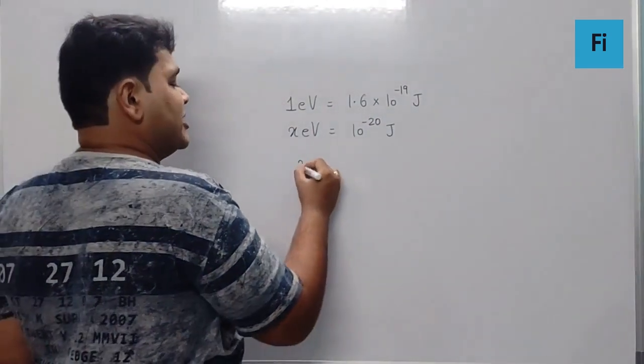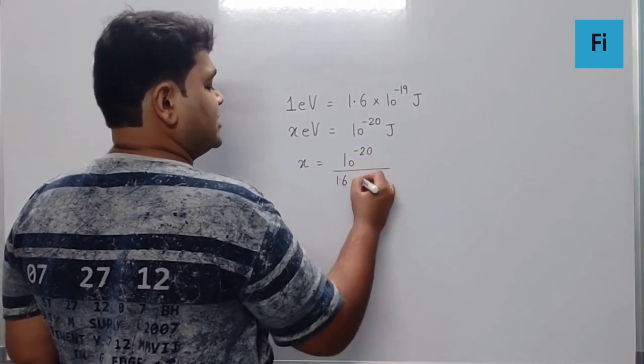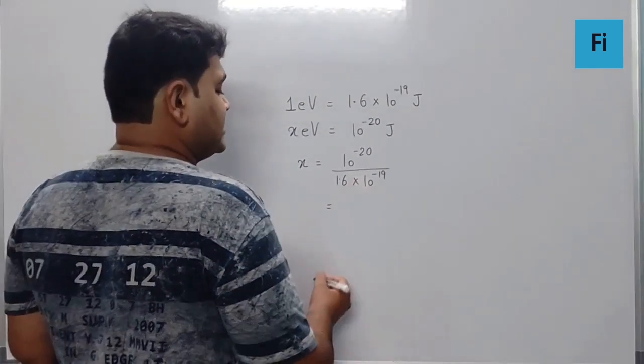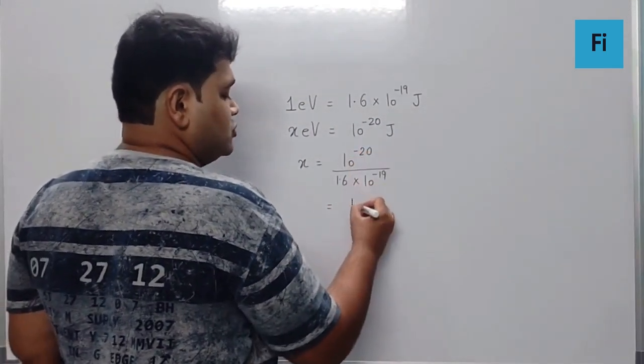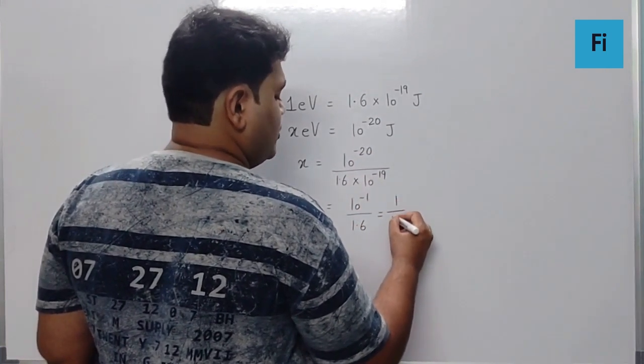If we do the cross multiplication we get X as 10 raised to minus 20 upon 1.6 into 10 raised to minus 19. That means this is 10 raised to minus 1 by 1.6 which is nothing but 1 by 16.